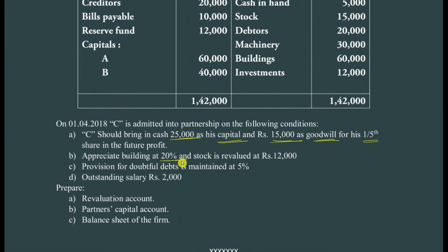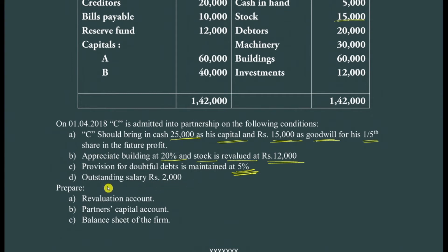The adjustments are: building appreciates at 20 percent from its actual value; stock is revalued at 12,000 rupees (it was 15,000, so it decreased by 3,000); provision for doubtful debts is maintained at 5 percent on debtors of 20,000; and outstanding salary of 2,000 rupees is due. Finally, we need to prepare the revaluation account, partners' capital account, and balance sheet of the firm.